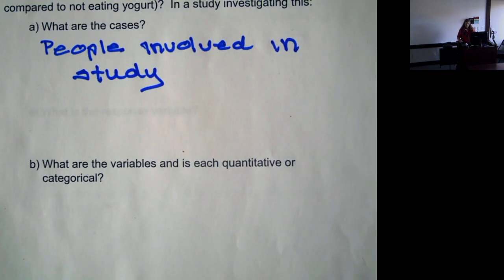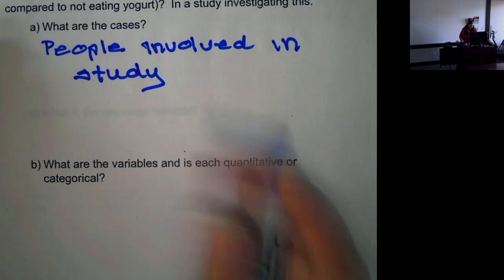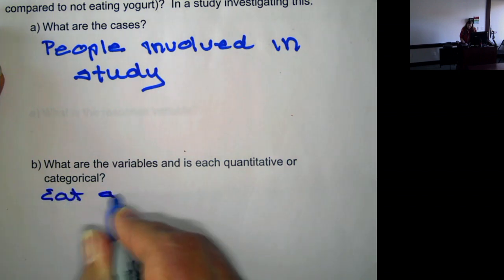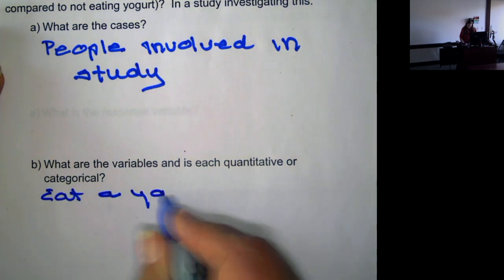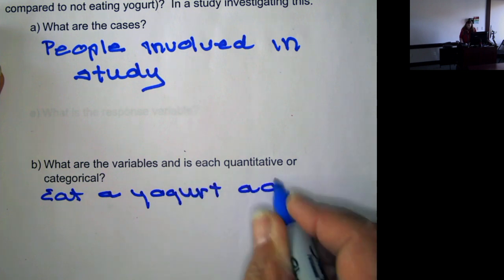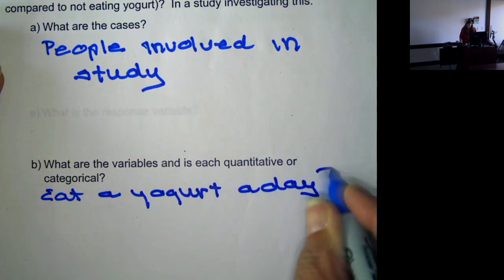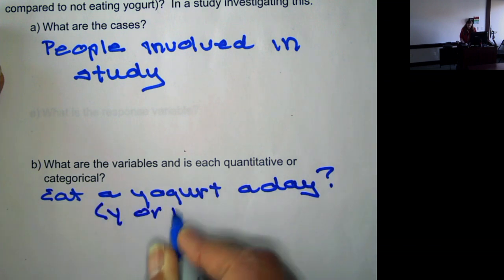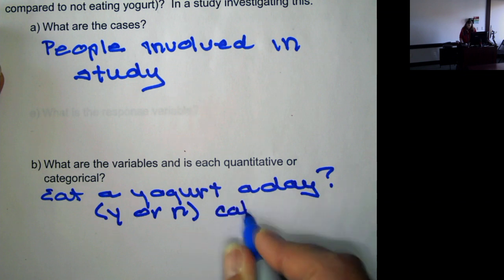Now the variables - these are what we're looking for, the information we ask each of the cases or each of the people. So one variable is: do you eat a yogurt a day? It's a yes or no question, so it's categorical.